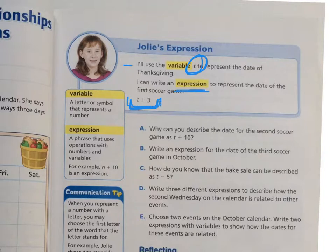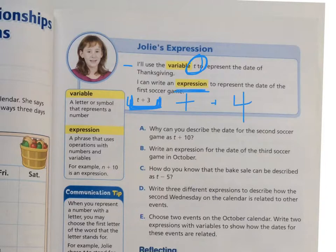Do you see how that worked? T plus 3. Now, if the soccer game was four days after Thanksgiving, can you tell me what the answer should be? If you said T plus 4, you got it right.